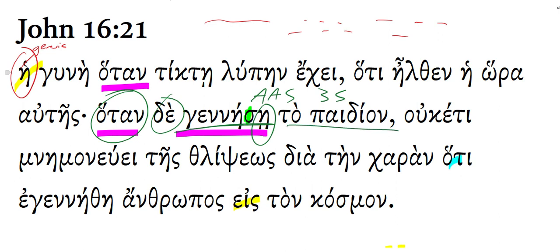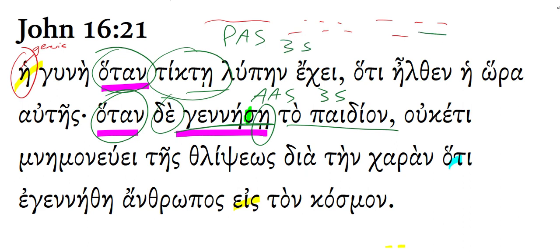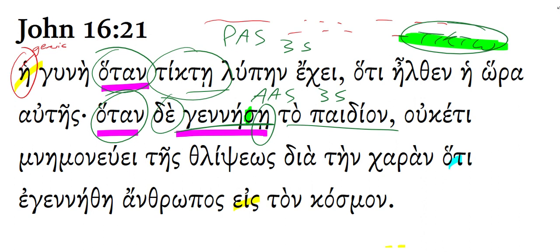This one here is a present. The first one following 'hotan' is going to be present — it's a present active subjunctive, third-person singular of the verb 'tiktō.' Tiktō means to give birth, to be in labor and give birth. It's used most frequently with a female subject, obviously, but occasionally with others.